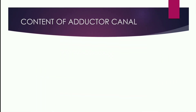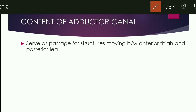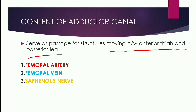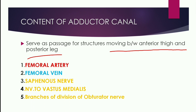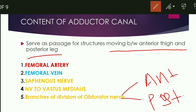Now the contents of the Adductor Canal. Basically, the Adductor Canal serves as a passage for structures moving between the anterior thigh and the posterior leg. The contents are: the femoral artery, femoral vein, saphenous nerve, nerve to Vastus Medialis, and a branch of the anterior and posterior division of the obturator nerve.